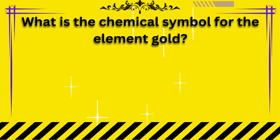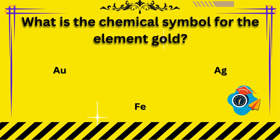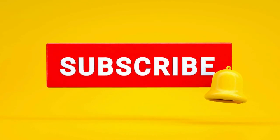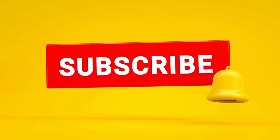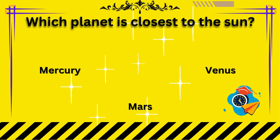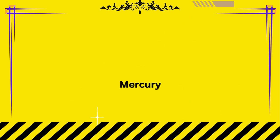What is the chemical symbol for the element gold? Which planet is closest to the sun? Mercury.